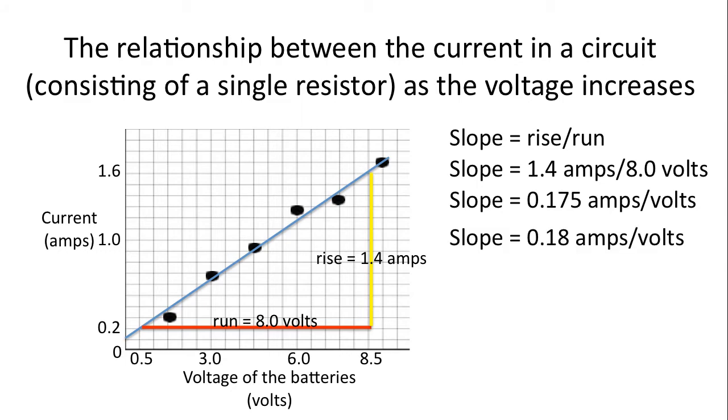And considering significant digits, our slope is 0.18 amps per volt. Why two significant digits? Notice, our rise has two significant digits, and our run has two significant digits. So our slope will have to have two significant digits.